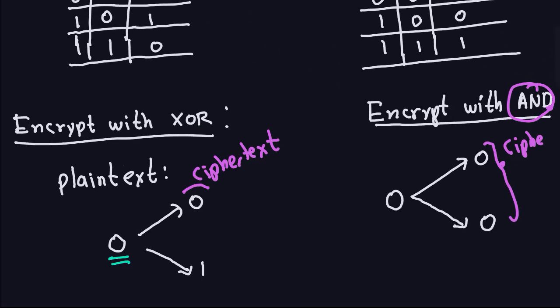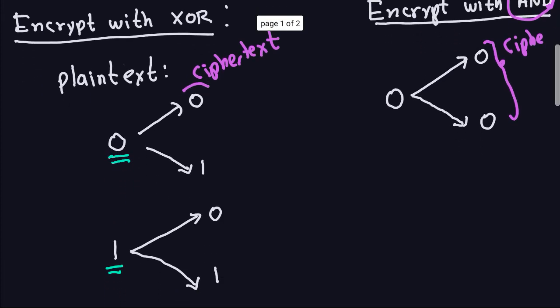So you don't want to use OR and you don't want to use AND, because when you encrypt something you want to give as little information as possible to the attacker. XOR gives the least information because if an attacker sees a one it could come from a zero or a one. That's why when using bitwise operations for encryption, you use XOR — it obscures the message much better than AND or OR. That's a very important reason why we use XOR. After this, we're going to talk about random number generators.